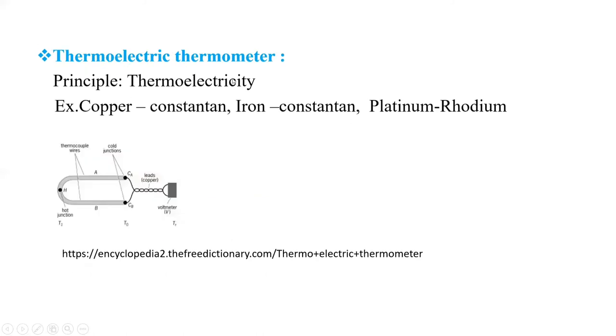Then thermoelectric thermometer. It is based on principle of thermoelectricity. Thermocouples are used in this thermometer: copper constantan, iron constantan, platinum rhodium. This is shown in this figure. These are thermocouple wires A and B. This is hot junction. These are cold junctions. And we can use this for measurement of temperature.